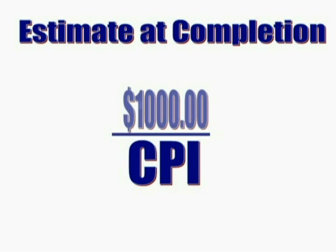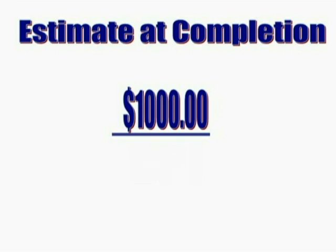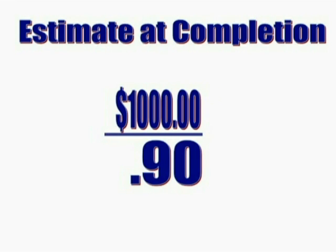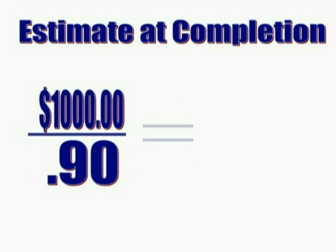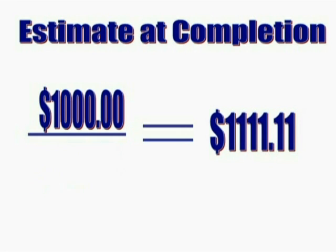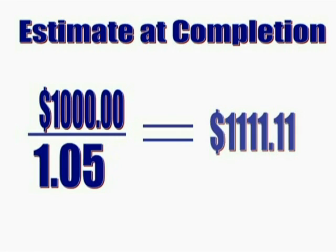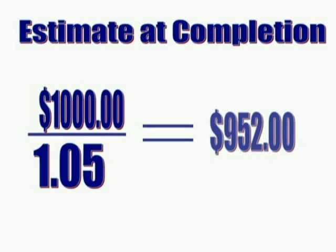If your total budget is $1,000 and you've got a CPI of 0.95, you can estimate a budgeted completion of just over $1,111 — a 10% cost overrun. While a CPI of 1.05 indicates a total cost of $952, meaning a gold star for bringing the project in under budget.